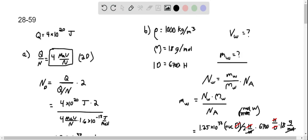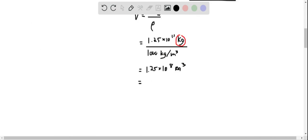Because everything is given to us with two significant figures, let's replace this with 1.3 times 10 to the 8 meters cubed as my final answer.